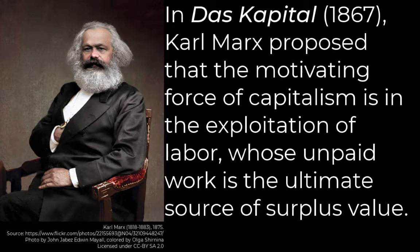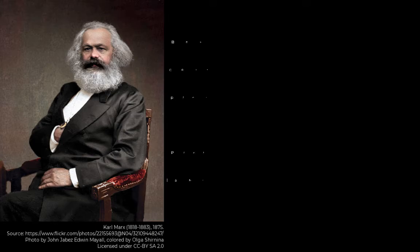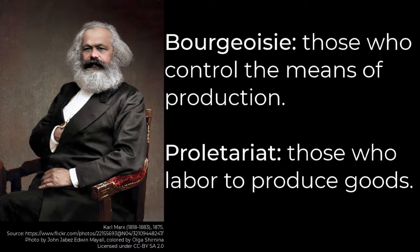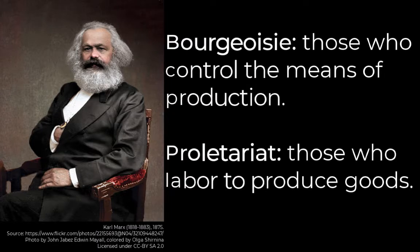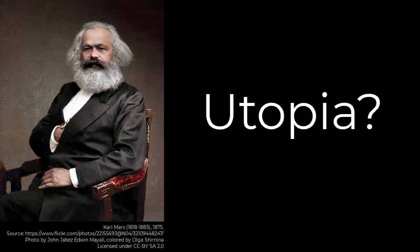Marxist theory argues that the history of civilization is the history of conflict between those who control the means of production — money, machinery, raw materials, etc. — and those who provide the labor for that production. Marx called the first group the bourgeoisie and the second group the proletariat. According to Marx, the capitalist system is no better than the feudal system it replaced; in both, those with the means of production control and exploit those without. Marx believed that eventually the proletariat would overthrow the bourgeoisie and create a worker's paradise — a classless society in which no one owns any property and thus has no power over anyone.